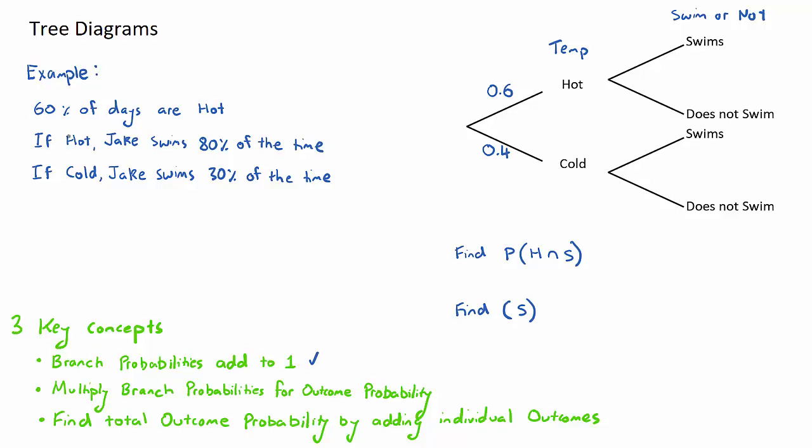Now let's have a look at the next information. If it's hot, Jake swims 80% of the time. This is the swim branch, so we're going to put a probability which as a decimal is 0.8 here. Again with the same rule, if this is 0.8, they need to add to one, so this will be 0.2. If it's cold, Jake swims 30% of the time, so now we're down here in the cold event. Swims 30% of the time, this will be 0.3. Again, same rule, they need to add to one, so this will be 0.7.